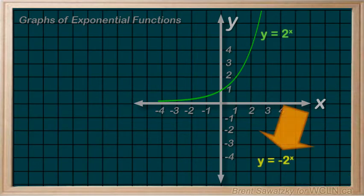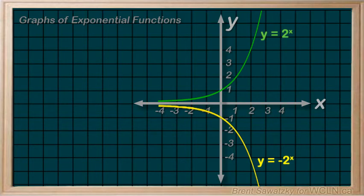If we put a negative out front here the graph reflects vertically just like the polynomials. Note that the negative is not in brackets so it's not impacted by the exponent.